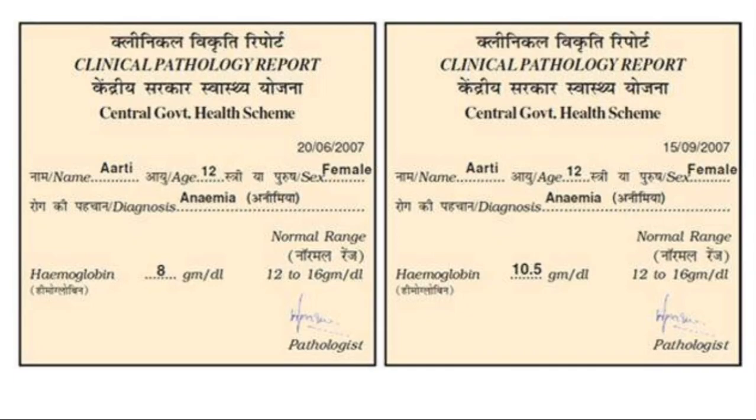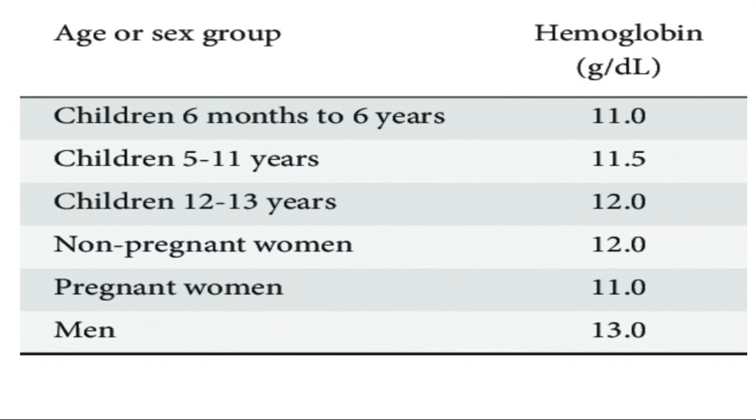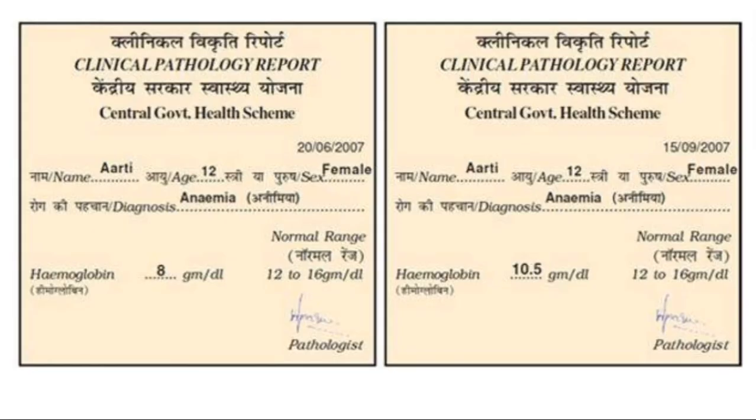How many years? She is 12 years old. She is female. The disease is anemia. She is 12 years old — see the table. The amount of blood is 8 points. But actually how much blood should she have? 12 points. But she only has 8 points. That is why she is diagnosed with anemia.